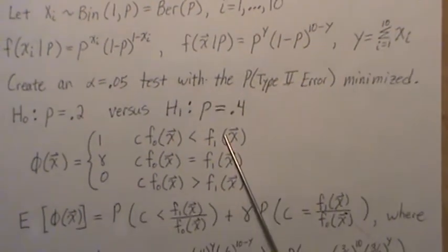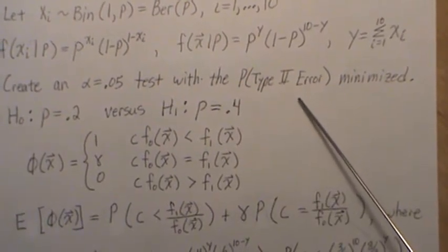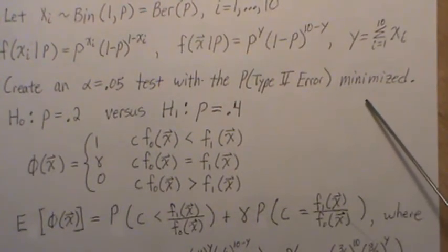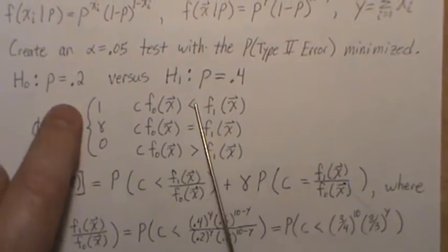So now what we want to do is create an alpha equal 0.05 test with the probability of the type 2 error minimized.